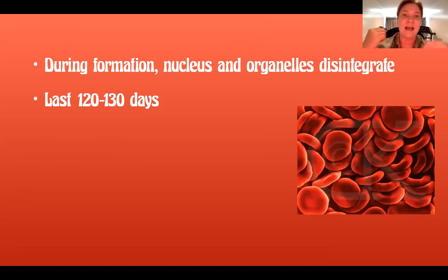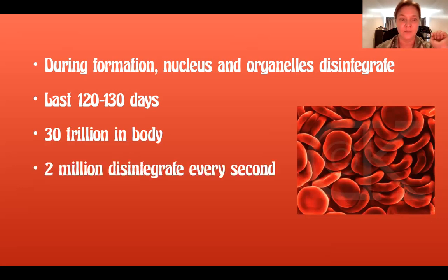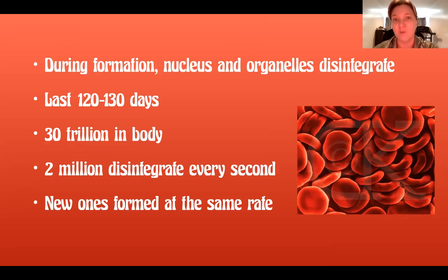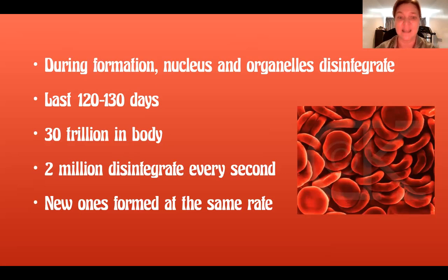Red blood cells last between 120 to 130 days, and at any given time you have about 30 trillion in your body. Two million red blood cells disintegrate every second, but they are formed at the same rate. So imagine your body producing just red blood cells — two million are replaced every second.